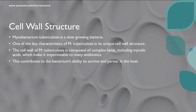Mycobacterium is a slow-growing bacteria. One of the key features of Mycobacterium tuberculosis is its unique cell wall structure, composed of complex lipids including mycolic acids, which makes it incredibly resilient and resistant to many antibiotics. This is one of the reasons why tuberculosis can be so difficult to treat.